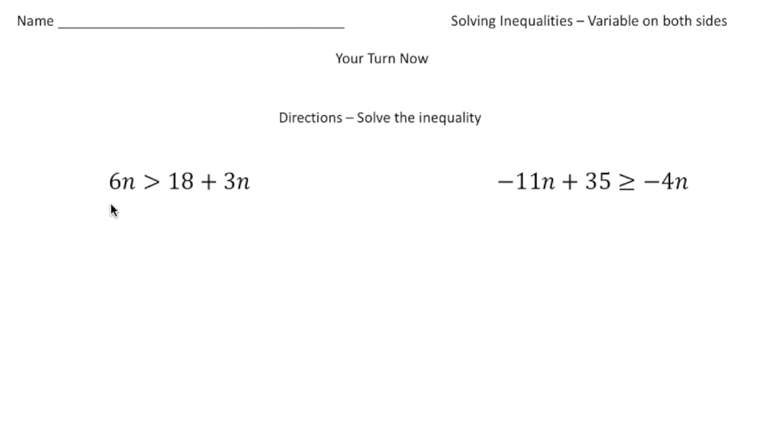For example, for this first one, I could take away 6n from both sides, or I could take away 3n from both sides. What you want to do is look at the problem and say, what really makes sense? What's the easiest? But what I normally do 9 times out of 10 is I'll remove the variable that's attached to the constant. So here we have 18 plus 3n, so I'm going to take away 3n from both sides. Now we have 3n is greater than 18. When I divide both sides by 3, the 3s cancel out and n is going to be greater than 6. And there's our first answer.